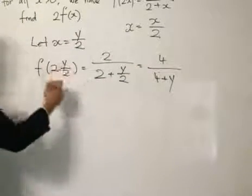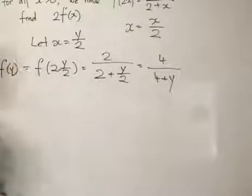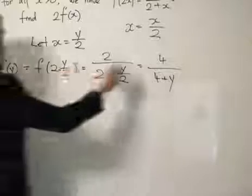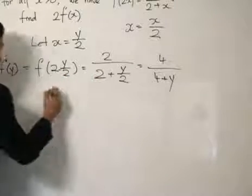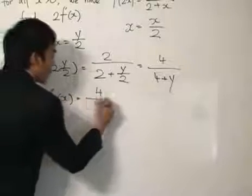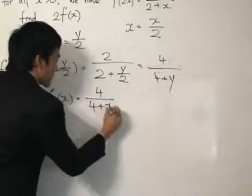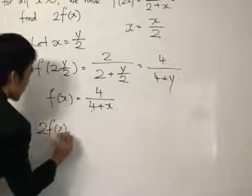And then this obviously equals f(y). This is how the proper algebra works—f(y) equals this. Then since that is the same function, you just change the variable back to x, so f(x) = 4/(4+x). And then if you times by 2, you will get 8/(4+x).